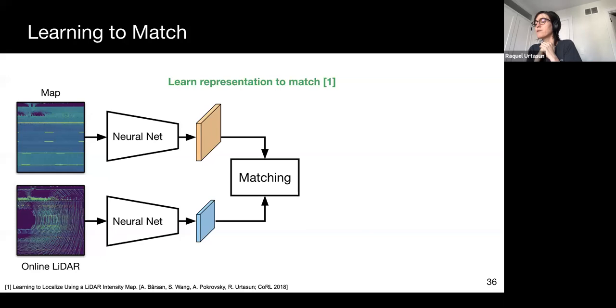Following the histogram filtering framework, we then compute a matching score for every pose within an immediate search range of our dead-reckoning pose. The search range is over x, y, and heading, so 3 degrees of freedom. This matching can be performed very efficiently in the Fourier domain, with specialized GPU kernels yielding localization times that are real-time.